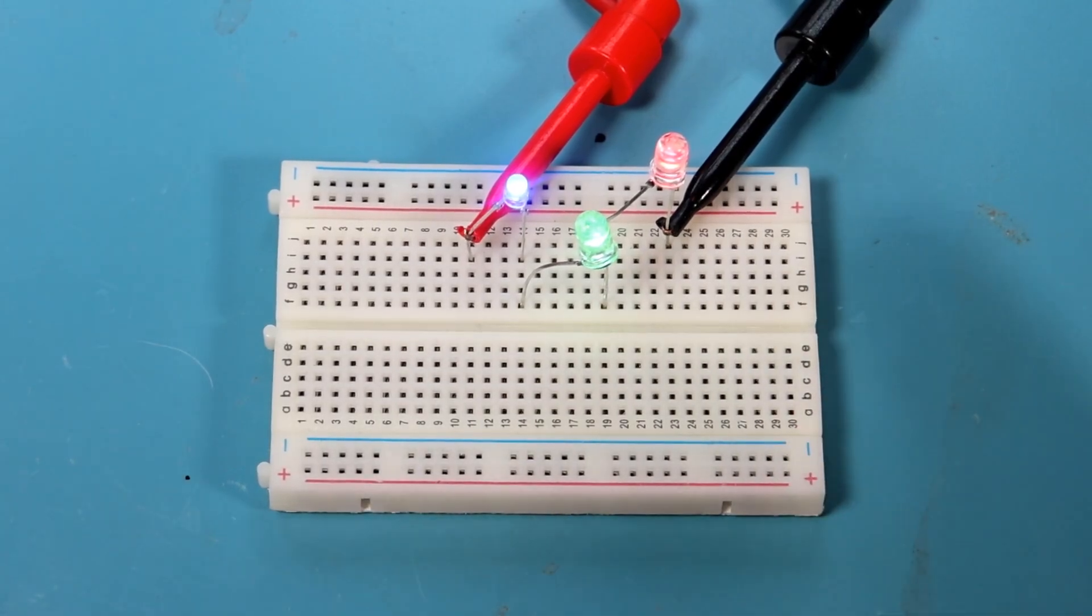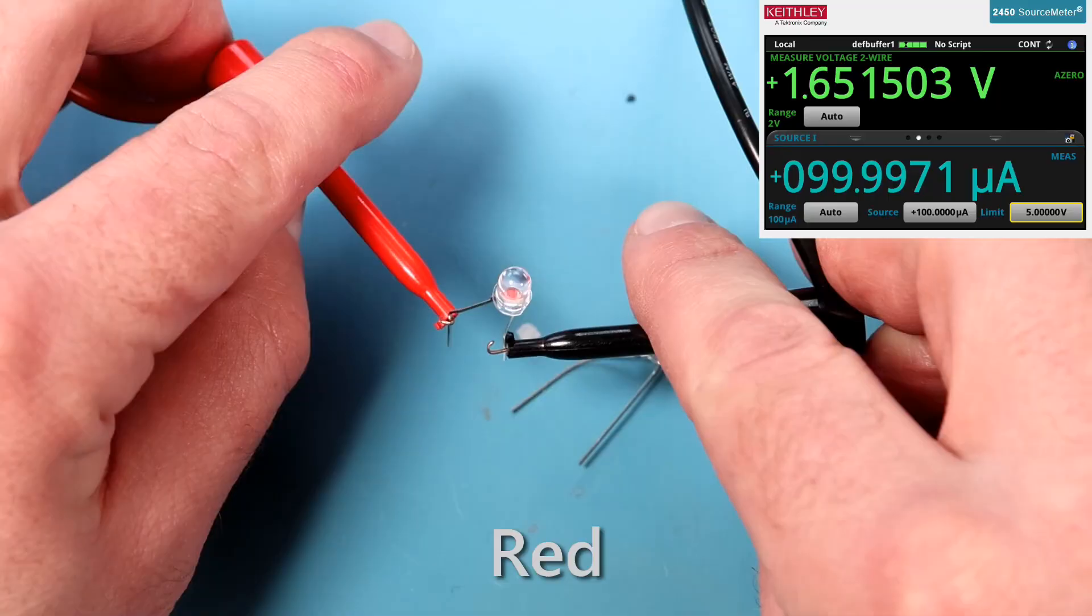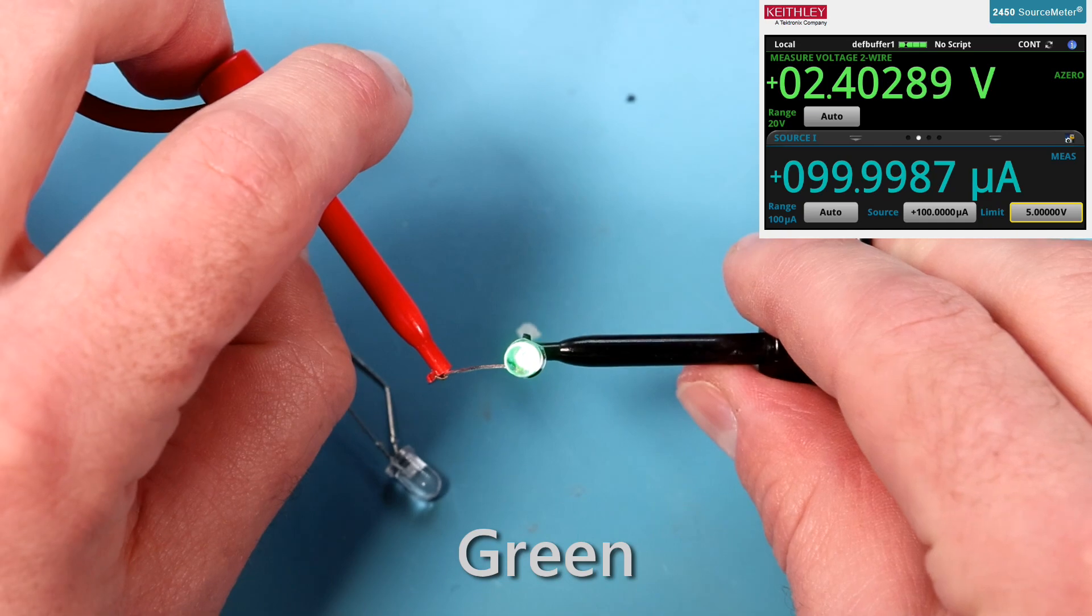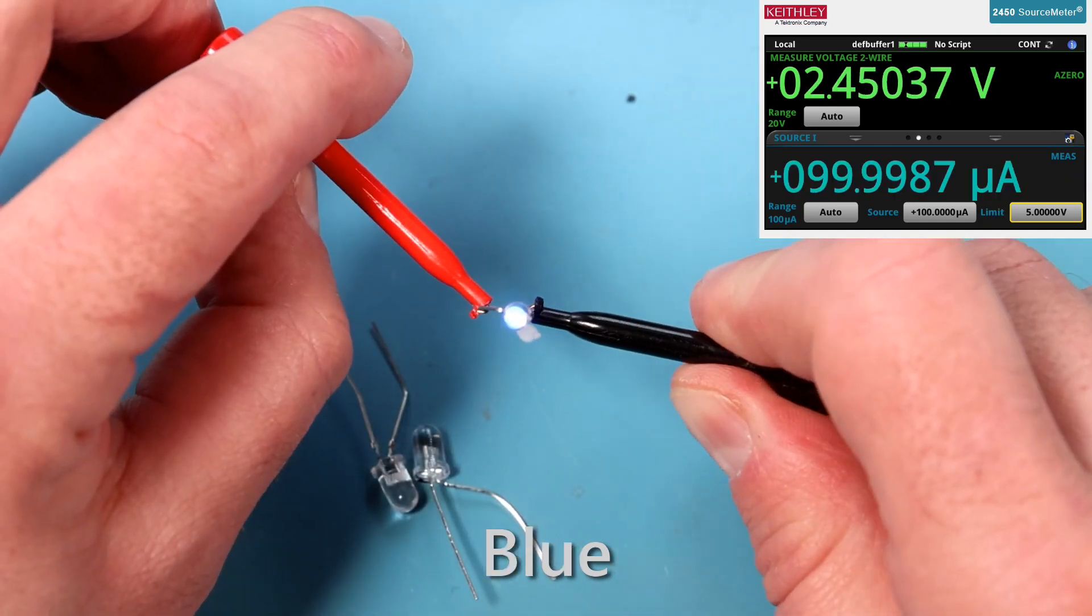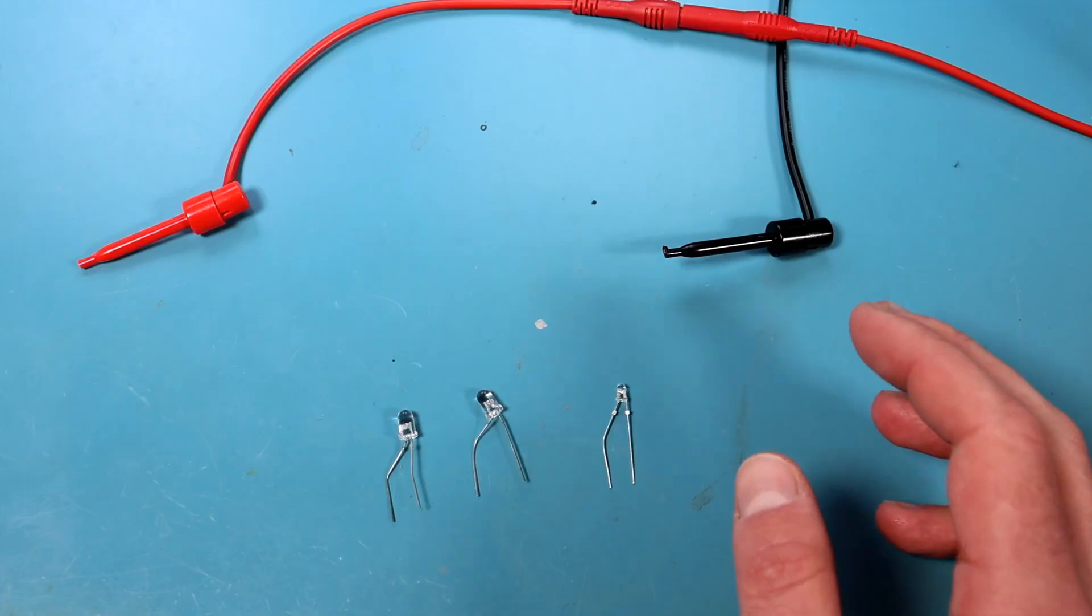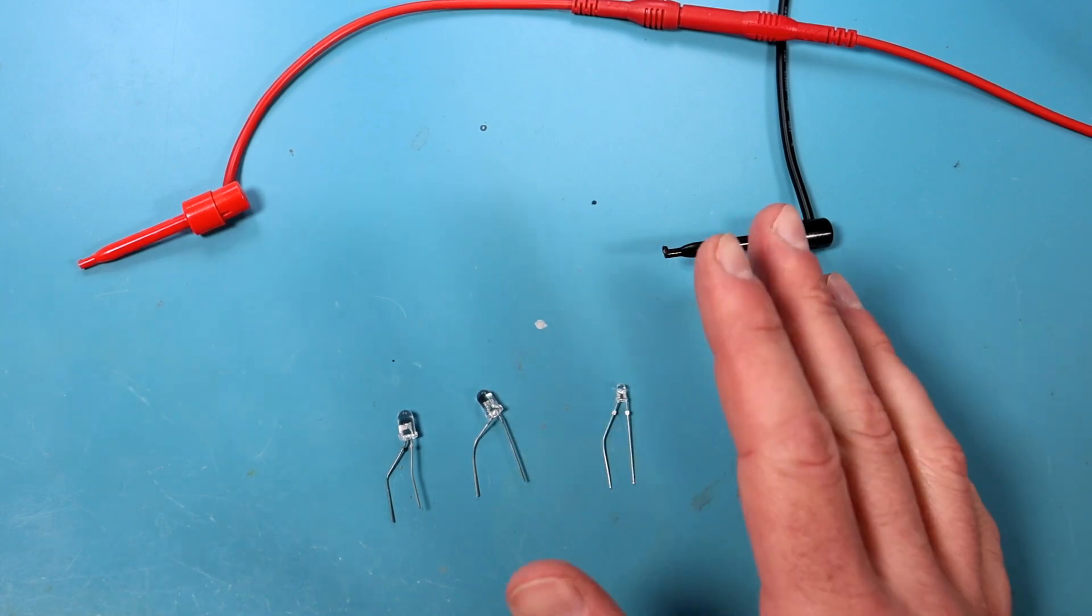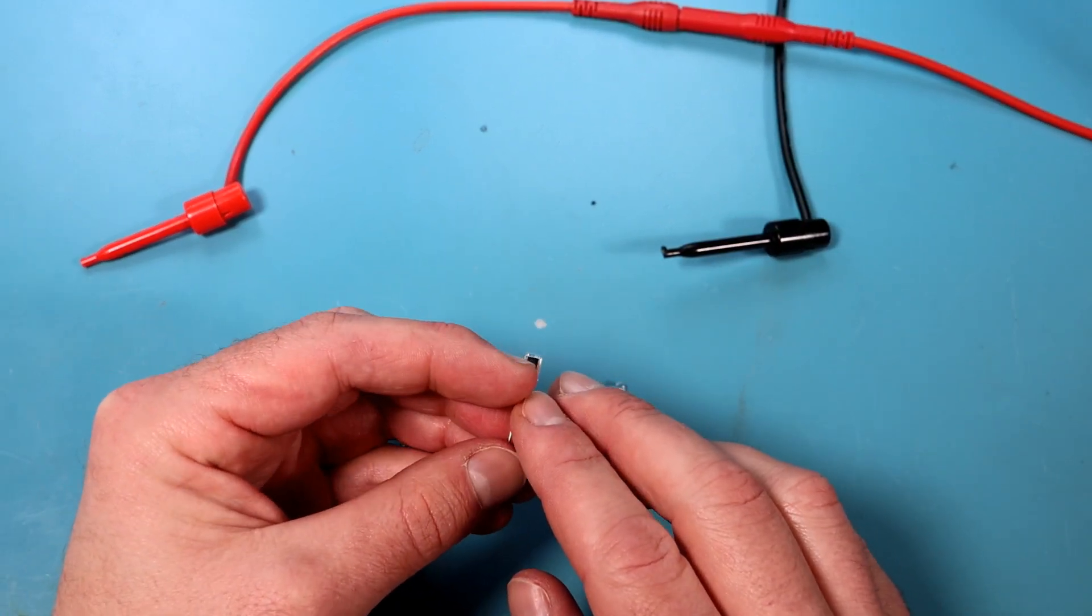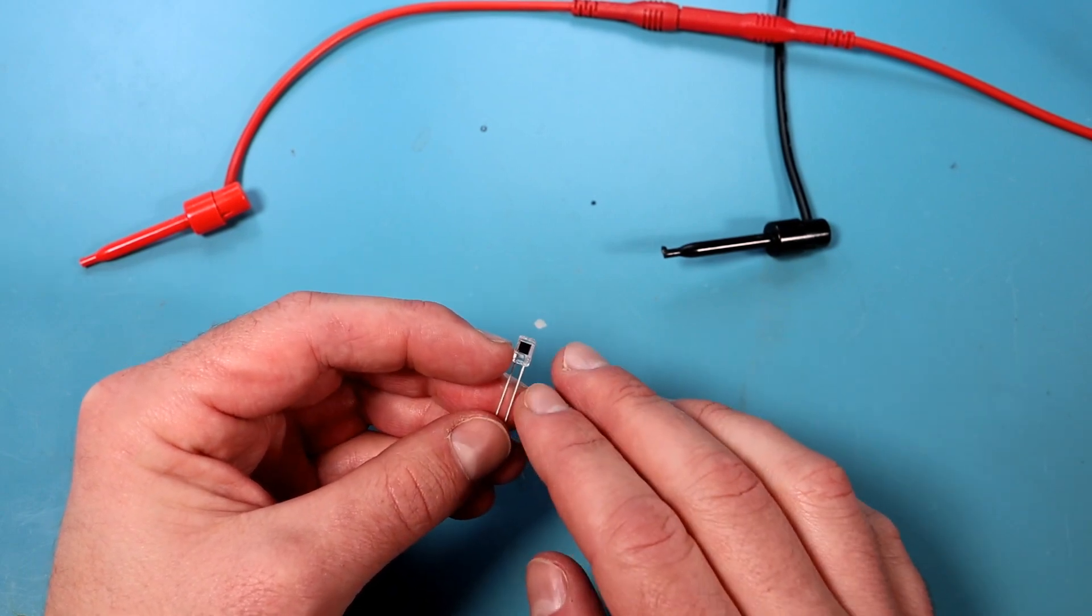LEDs like these are pretty simple to use, give them some power with the right polarity and they emit light. To a first approximation, each LED has a constant voltage drop across it, so the amount of current determines how much light they will emit. But let's say you want to detect light instead of make light. You'll probably reach for a photodiode like one of these. However, it turns out that you can make ordinary LEDs behave like photodiodes.